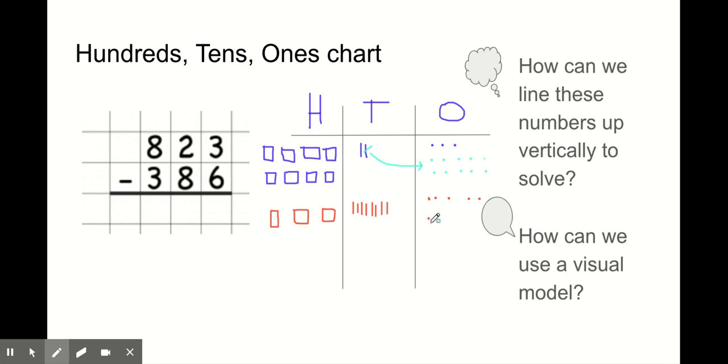Can I take 6 of those away? I sure can. So now, with my red dot, I'm going to cross out 6. 1, 2, 3, 4, 5, 6. How many ones do I have left? I have 7 ones left. So 7 would go over here.